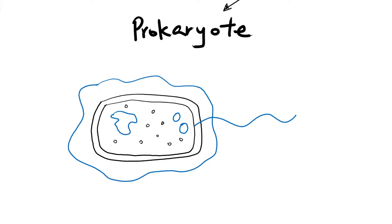Let's start with the organelles found in most basic cells. First, we have the cytoplasm, which is made up of the whole general jelly-like substance inside the cell, and the cytoplasm is where chemical reactions take place.